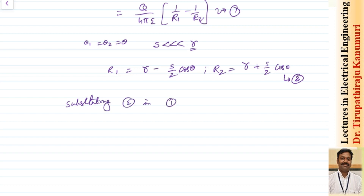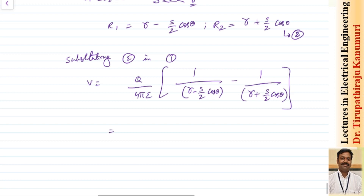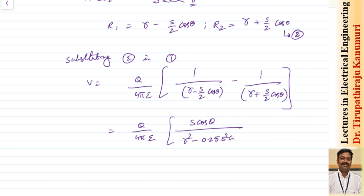Substituting equation number 2 in equation number 1, we can write the value of the voltage as Q by 4 pi epsilon into 1 divided by (R minus S by 2 cos theta) minus 1 divided by (R plus S by 2 cos theta). So we can simplify this: this becomes Q by 4 pi epsilon into S cos theta divided by the denominator, which will be R squared minus 0.25 into S squared cos squared theta.